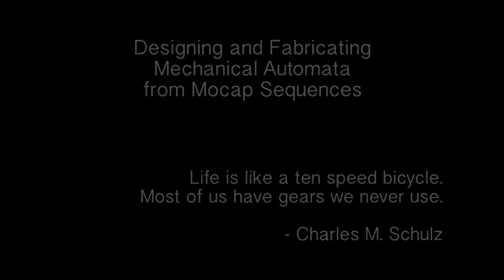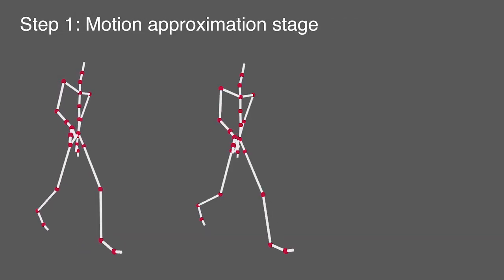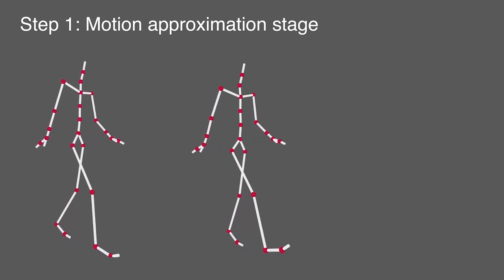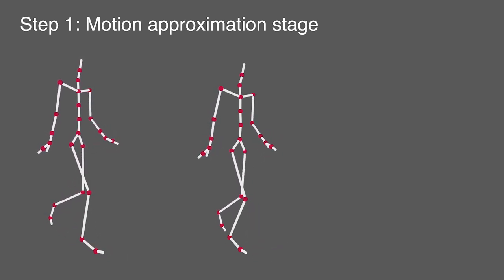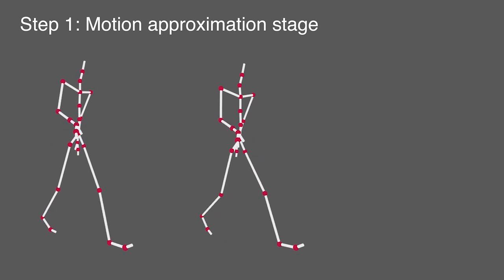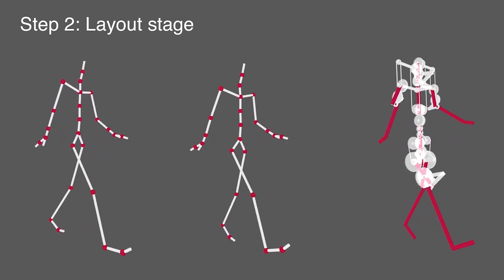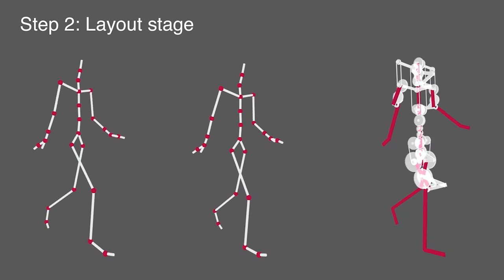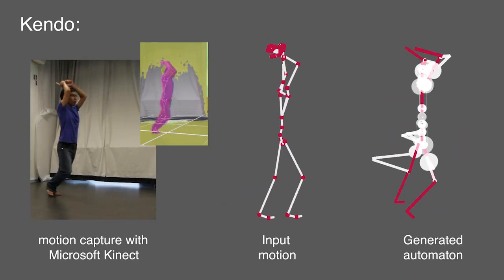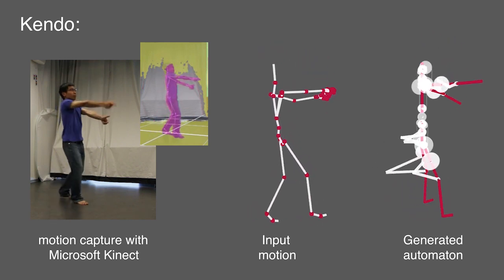To create mechanical figures that mimic human motions requires expertise in motion planning, knowledge of mechanism design, and familiarity with fabrication constraints. An automatic algorithm has been designed that takes a motion sequence of a humanoid character and generates the design for a mechanical figure that approximates the input motion when driven with a single constant crank speed.